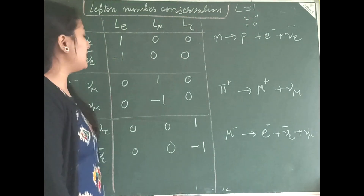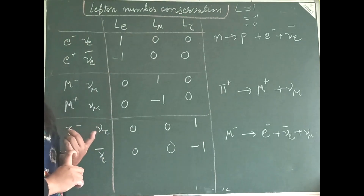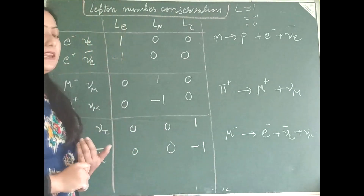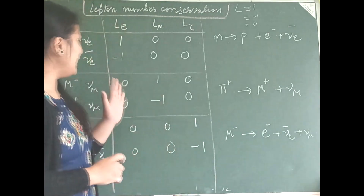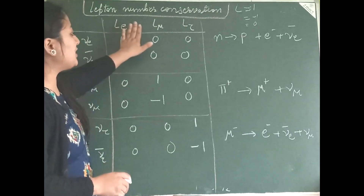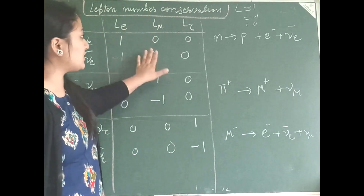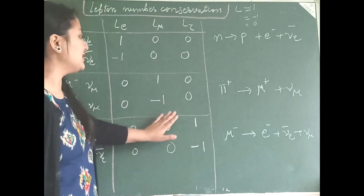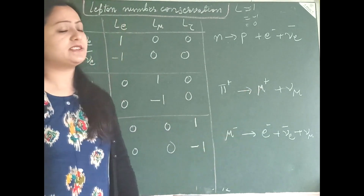One important thing to consider while looking at lepton number conservation is that lepton number is conserved individually. Meaning, electron lepton number must be conserved separately, muon lepton number must be conserved separately, and tau lepton number must be conserved separately.